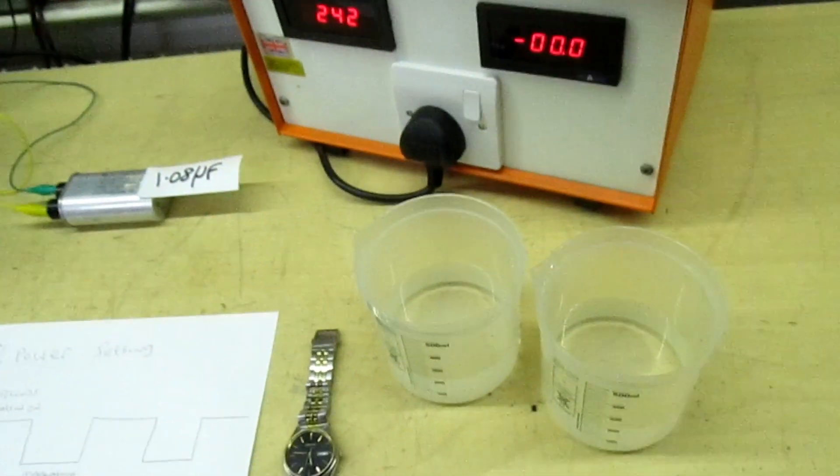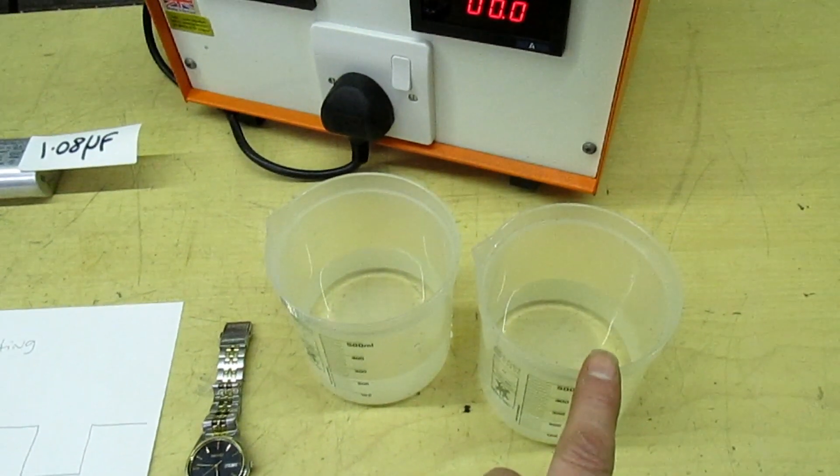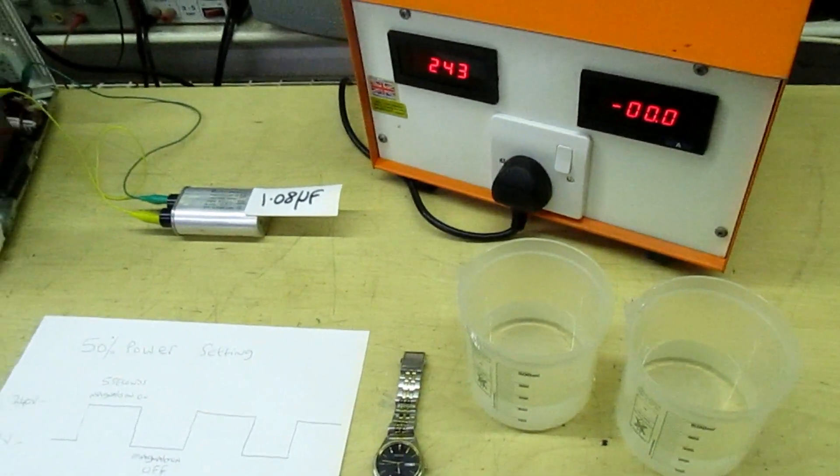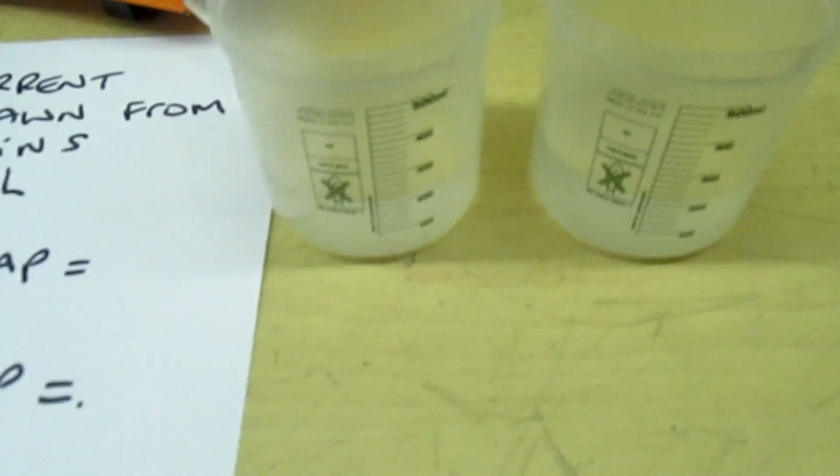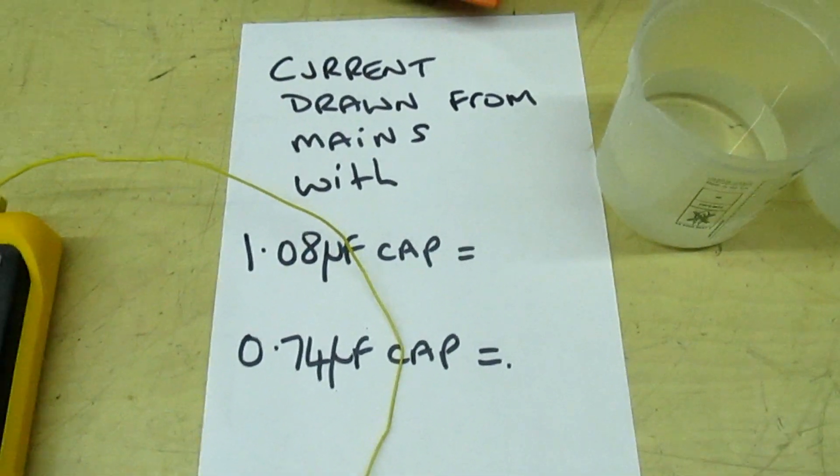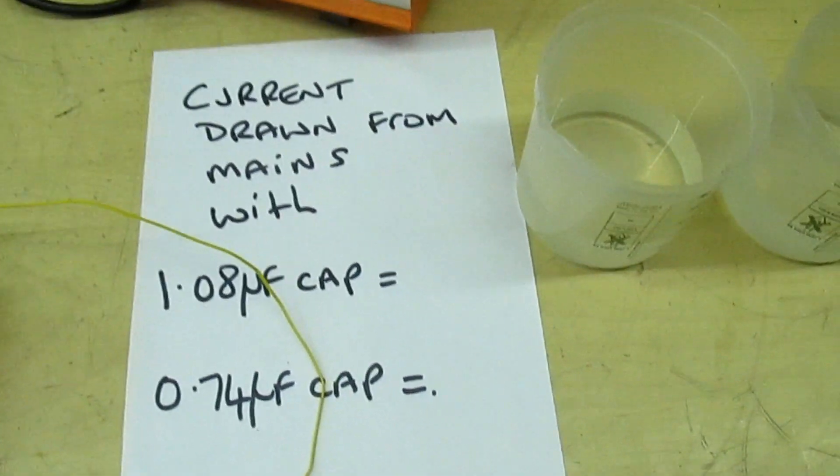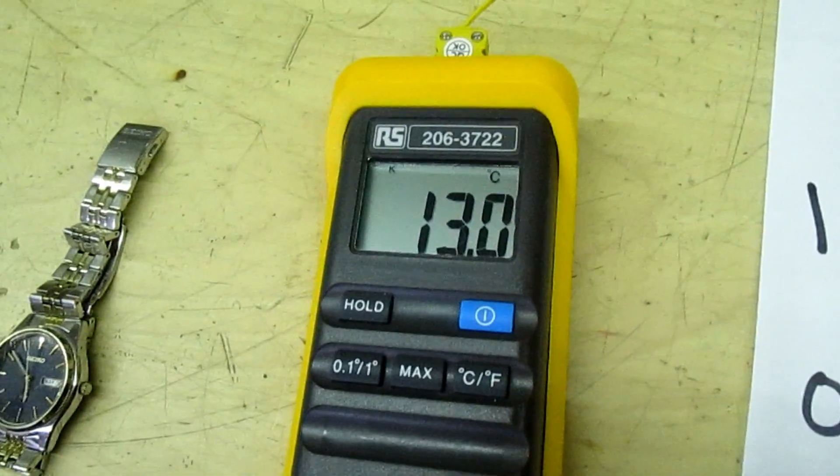We're going to see what the microwave draws with a 1.08 microfarad capacitor. And also, to show you the difference in output power, I've got two beakers, both with 200 mils of water. We're going to measure the water in each microwave for one minute using two different capacitors and I'll show you the results. Right, so here we go. We've got two beakers of water, 200 mils in each. I've made a chart there. We're going to measure the current drawn from the mains with the 1.08 µF cap and also with a 0.74 µF, and I'll show you the temperature difference as well.